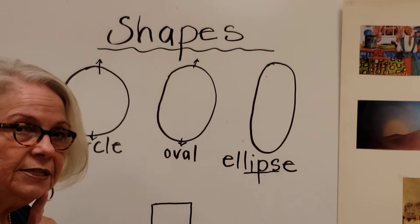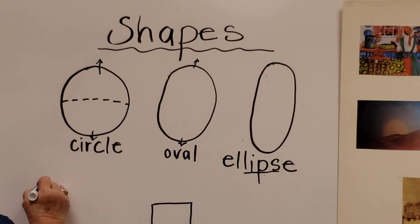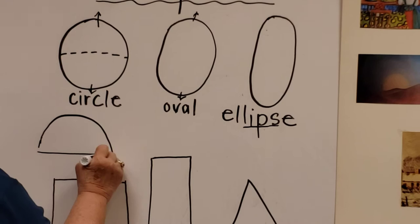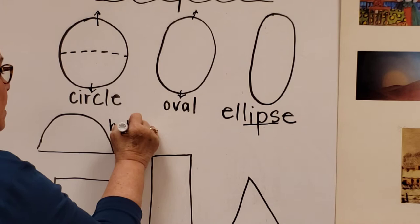I'll show you something else too that we use a lot when we're making our artwork. If you cut that circle right in half, not a perfect half, but if you cut it in half just like that, you're going to have this shape. And if you cut the circle in half, it's just called a half circle.